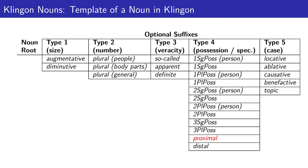Finally, there are two type 4 suffixes that mark specification rather than possession: a proximal suffix and a distal suffix. Type 5 suffixes encode information regarding case, marking the noun as locative, ablative, causative, benefactive, or the topic of the conversation.